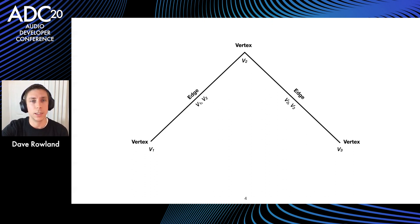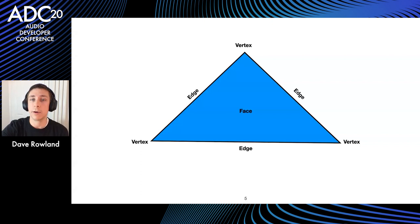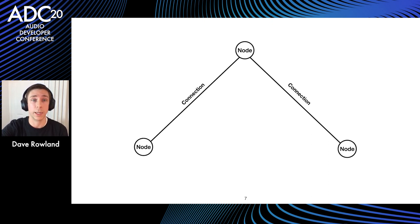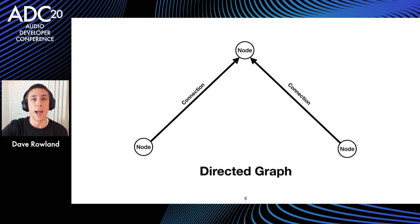We can draw these sets: here we have three vertices V1, V2, and V3, and two edges connecting them. If we had an edge connecting the bottom two vertices, the enclosed area is called a face — used a lot in graphics processing but not something we'll cover today. We can rename vertices to nodes and edges to connections, which starts to feel more familiar in audio.